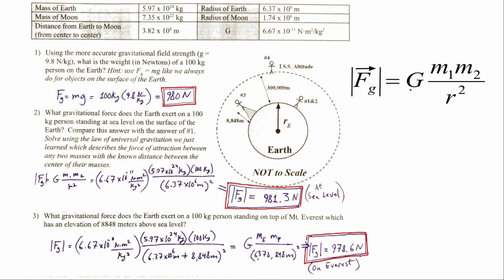The formula uses the universal gravitation constant, big G, times the mass of the first object, times the mass of the second object that are attracting one another, divided by r squared, where r is the distance between the centers of these two masses.